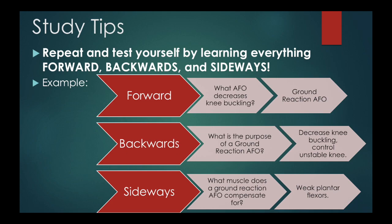Sideways is a different way of thinking about it. Any concept you're learning — once you've learned it forward and backwards — take an extra step to think about it in a different way. So if you're on the test and you're asked about it, you've made another association with that content. For example, we know a ground reaction AFO controls for knee buckling and excessive knee flexion. Thinking of it sideways would be to ask: what muscle does a ground reaction AFO compensate for? That would be weak plantar flexors, because they're not able to eccentrically control tibial advancement — the tibia goes all the way forward and your knee buckles. Learn it forward, backwards, and sideways because you don't know how the NPTE is going to ask these questions.